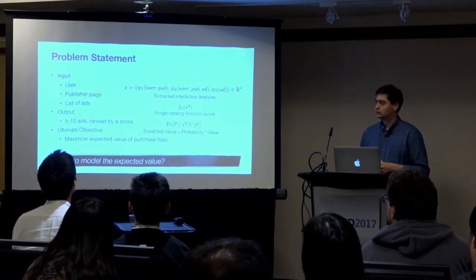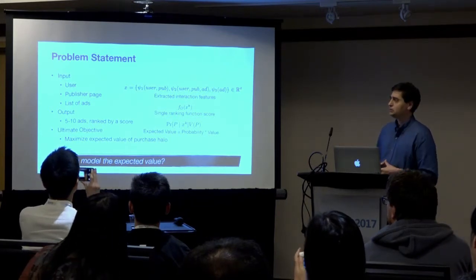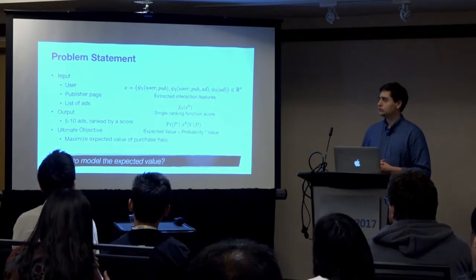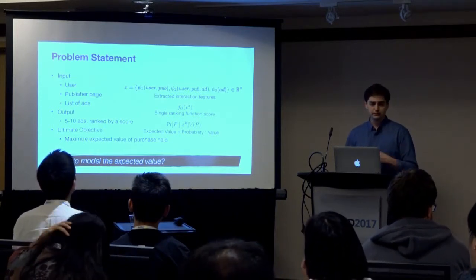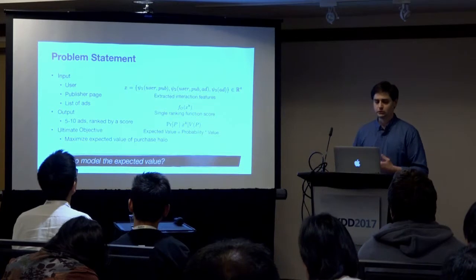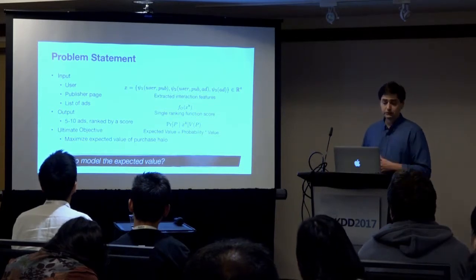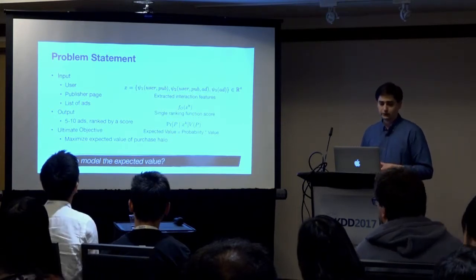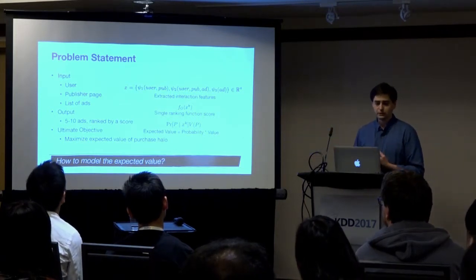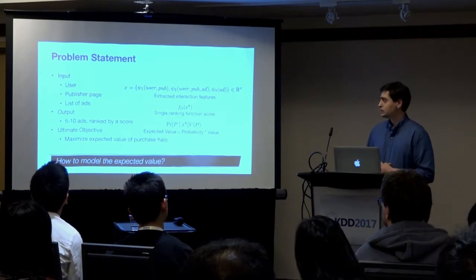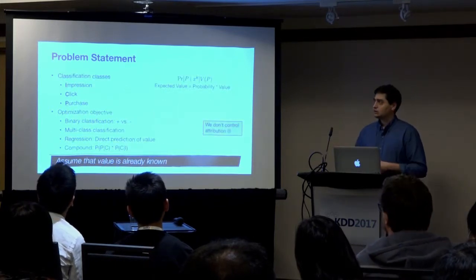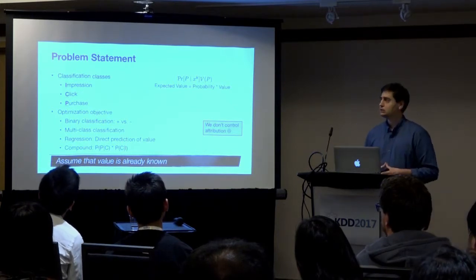The problem we're trying to solve is how to do conversion prediction where conversions could be multiple purchases, and sometimes a click is useful even if it doesn't lead directly to a purchase. More precisely: given a user on a publisher's page looking at a list of ads, we want a ranking function that returns five to ten ads from Amazon's vast catalog, ranked by a single scoring function. The objective is to maximize total expected value, modeled as a probability multiplied by a value — and the question is how to model this expected value.